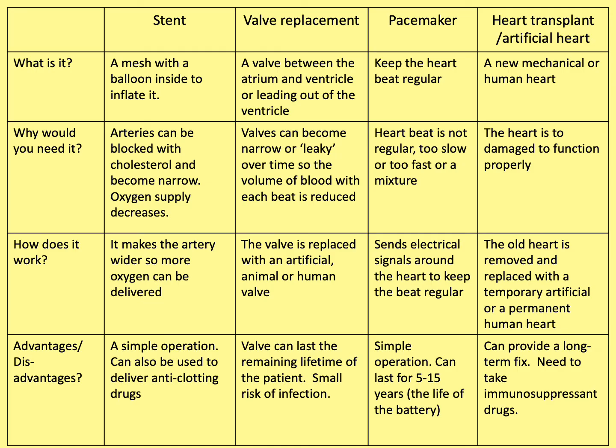If you completed the research table earlier, here is a completed version with all of the answers so you can green-pen your work. If your teacher told you not to complete it, this is a good example showing what stents, valve replacement, pacemakers, and heart transplants or artificial hearts are — what they are, why they're needed, how they work, and their advantages and disadvantages.